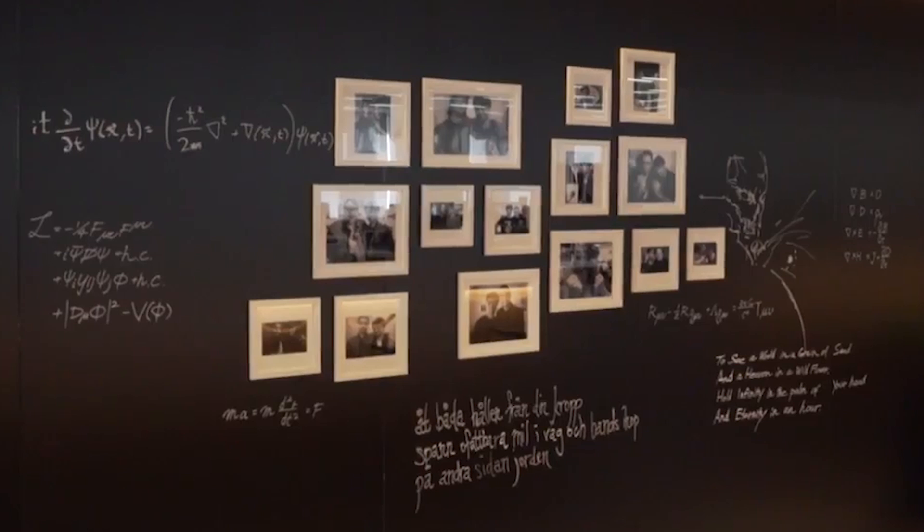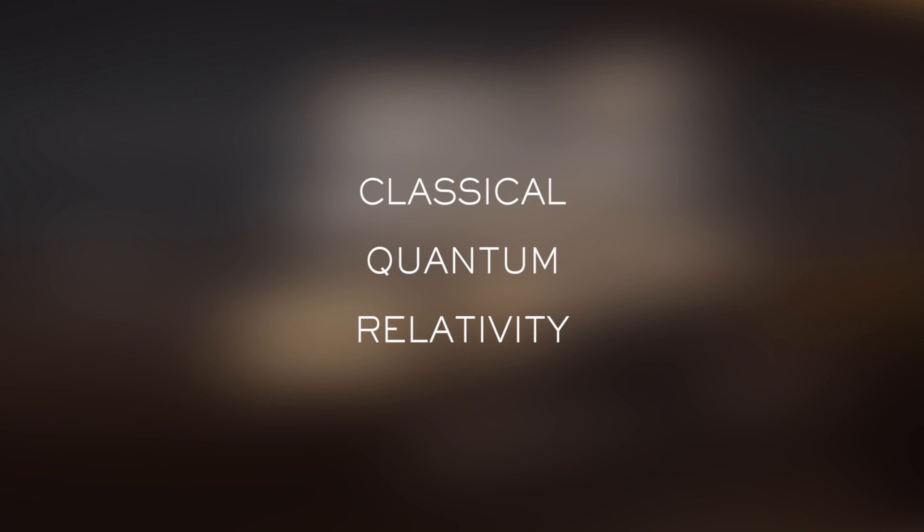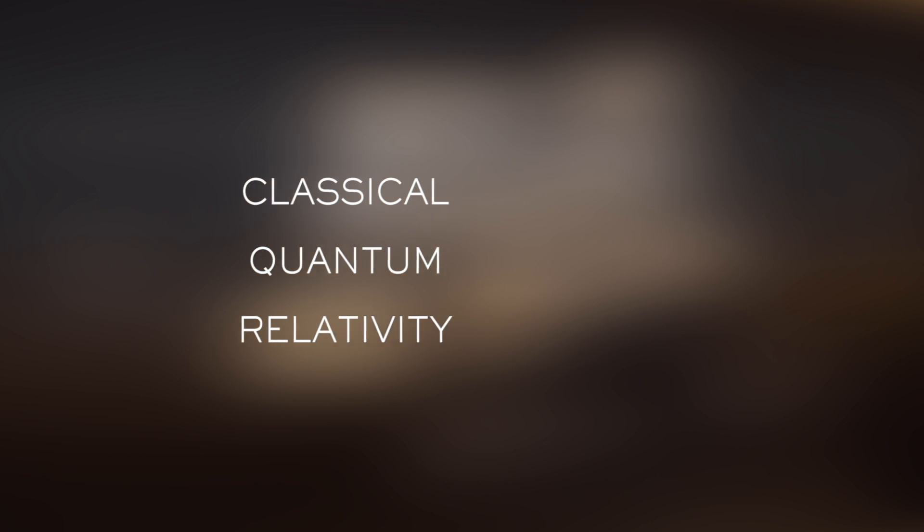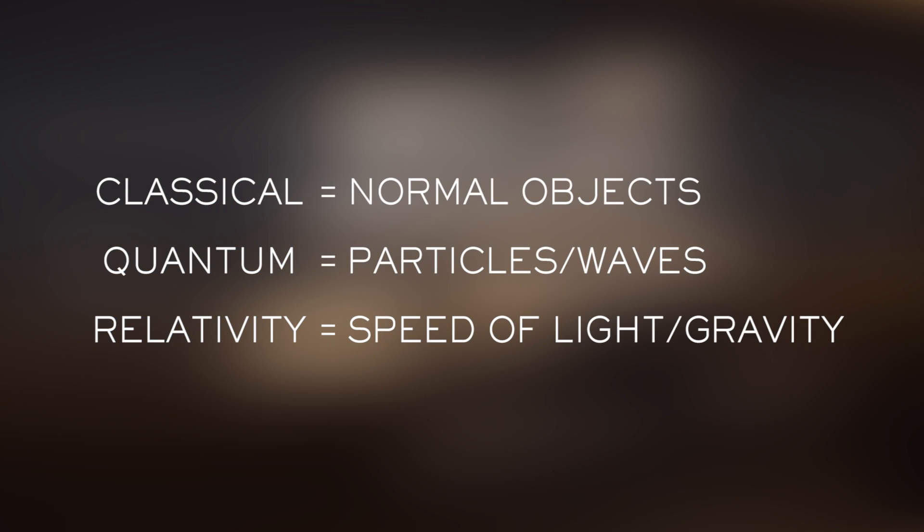Before we dive into these equations, there are a few terms that I would like for you to keep in mind. Throughout this video, you may find yourself hearing words such as classical, quantum, and relativity from time to time. All you have to know about these terms is that classical is often associated with your normal everyday objects, so basically anything you can see around you. The term quantum is associated with particles and waves, so things like electrons and other subatomic elements that you can't see with your naked eye.